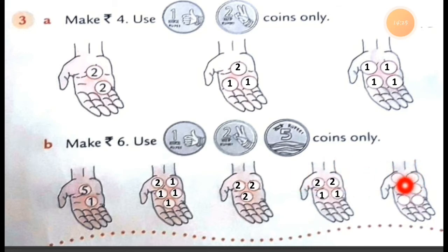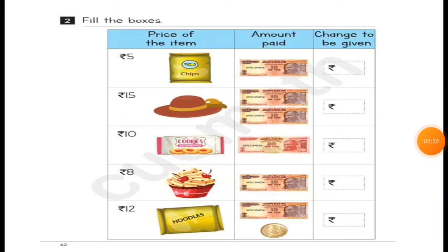The last one: there are 6 coins given, and we have to make rupees 6. We can use 6 coins of rupees 1. Taking 1 coin of rupees 1 at a time: 1, 2, 3, 4, 5, 6 — it is 6 rupees. So, here we are taking 6 coins of rupee 1.